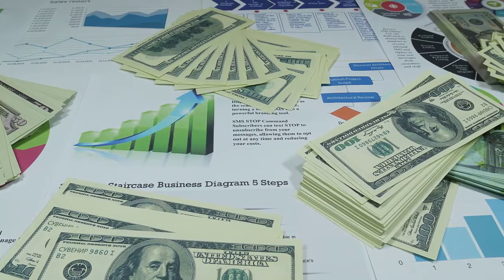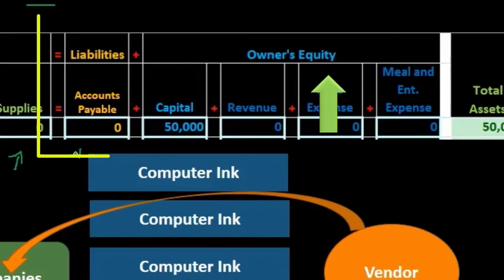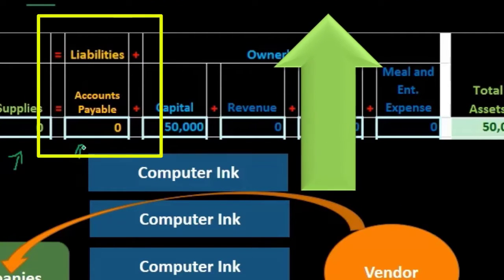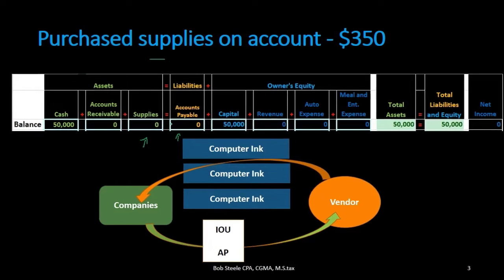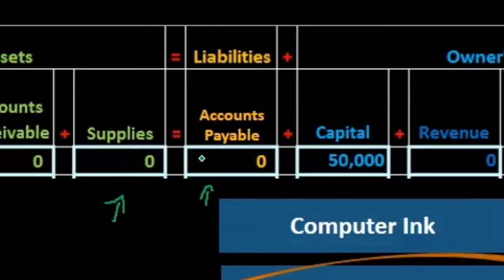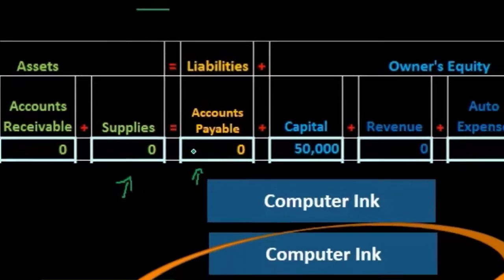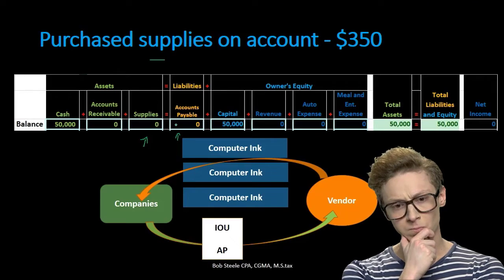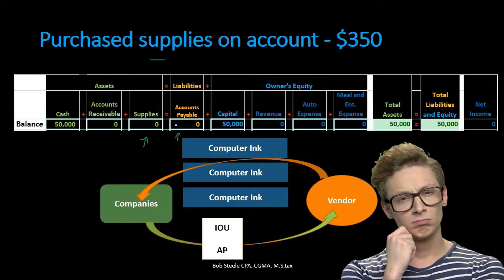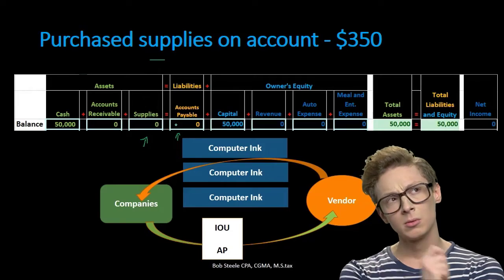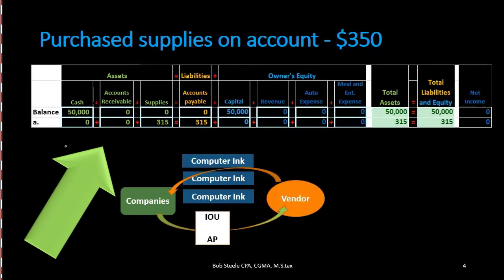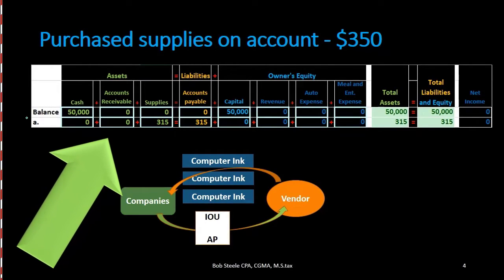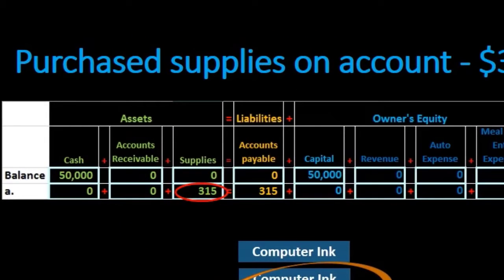That other account is accounts payable, which is going to increase by the same amount. We know this for two reasons: supplies went up on one side of the equal sign, so accounts payable must go up on the other side. We also know accounts payable is something we don't like — the bad thing is going up — because we owe more money after this transaction.